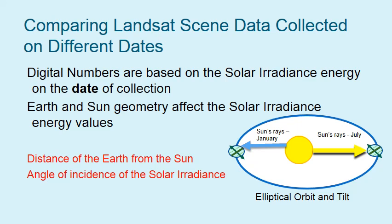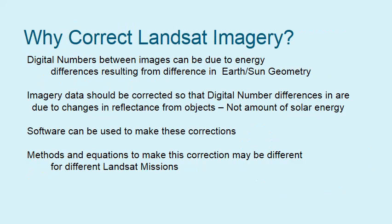This diagram shows our elliptic orbit, the sun's rays, and the tilt. Why correct Landsat imagery? Digital number differences between images can be due to energy differences resulting from different Earth-Sun geometry. You really want those digital number differences to be due to changes in reflectance of the objects you're observing, and not the amount of solar energy. Software can be used to make these corrections, and methods and equations may differ for different Landsat missions.